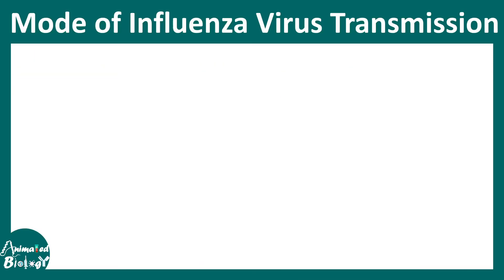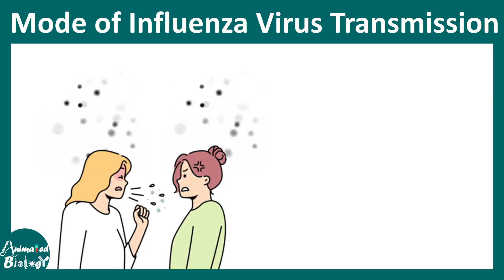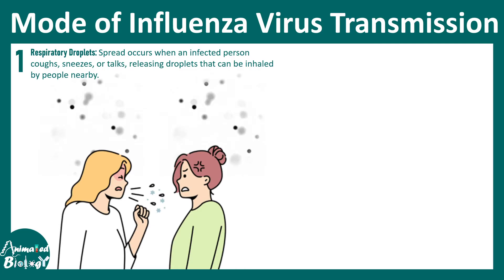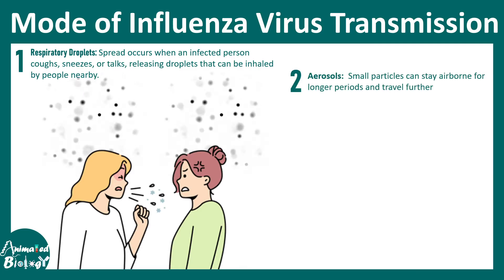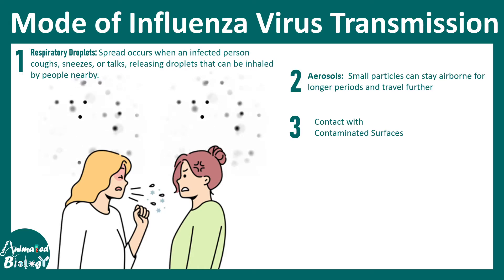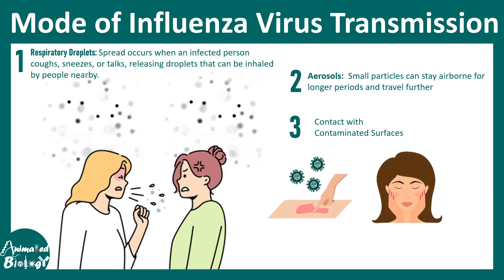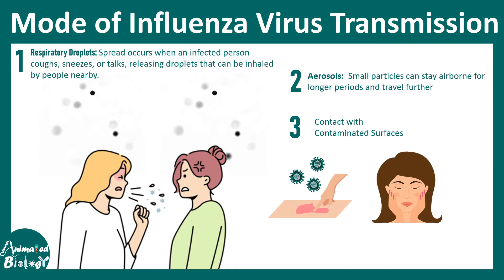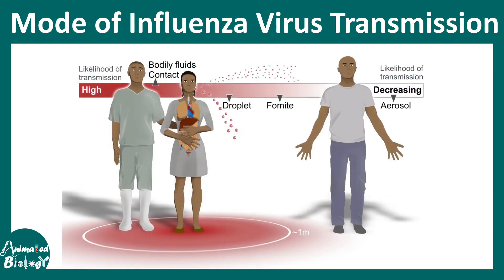Regarding modes of influenza virus transmission, respiratory droplets are the biggest culprit. Apart from that, aerosols can be another risk factor, and contact with contaminated surfaces — such as touching a table that has droplets from an infected person and then touching the face, ears, or eyes — can also transmit the virus, similar to COVID infection. The chance of infection varies by distance: if the distance between an infected and non-infected person is less than one meter, droplet infection is a major cause.